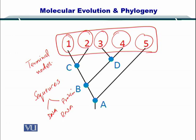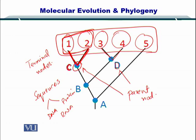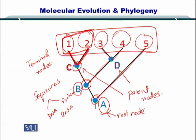You can look at their relationships in terms of evolution. In this example, sequences one and two are related as shown by node c. Three and four are related, and these are called parent nodes. And five is related to both of them through the parent node b. Node a here is called the root node. So this is the basic information that a phylogenetic tree is showing you, and how these are built will be discussed later.